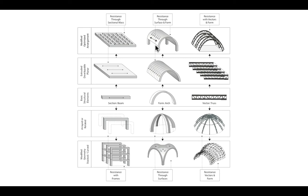Or we can turn the arch into a doubly curved system — the most obvious being a dome, where we rotate the arch around itself, getting curvature in section and curvature in plan. Very much analogous to the two-way slab, because loads can flow in two different ways, we get added efficiencies. A dome can span much farther for the same amount of material than an arch or an extruded arch.